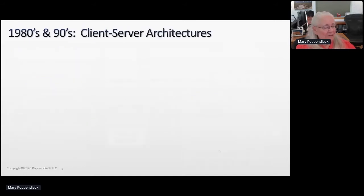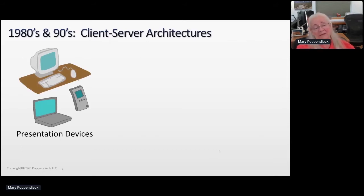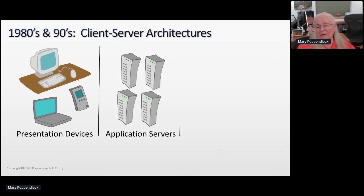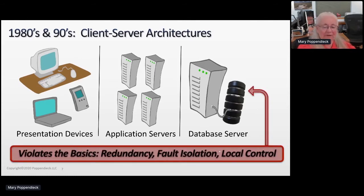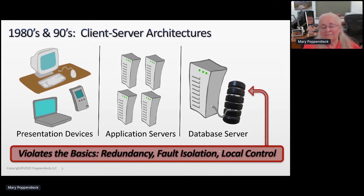Moving into the 80s and 90s, an architecture I saw a lot of in big companies was client-server — one tier, two tier, or three tiers. The classic client-server architecture was a three-tier architecture: presentation devices, application servers, and a big database server. The problem was that one single database server violated redundancy, fault isolation, and local control basics. It was redundant on paper, but the backup took forever to get to. People at workstations had no local control — if that database went out, they couldn't continue.